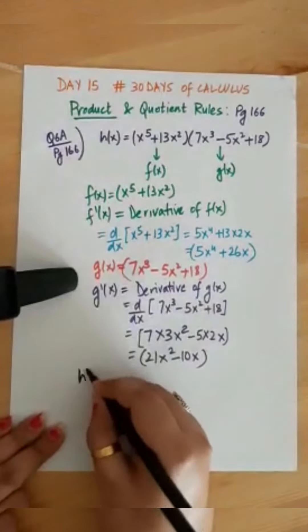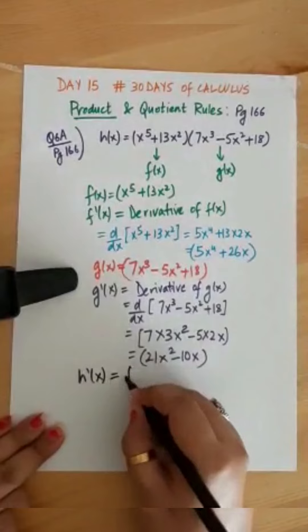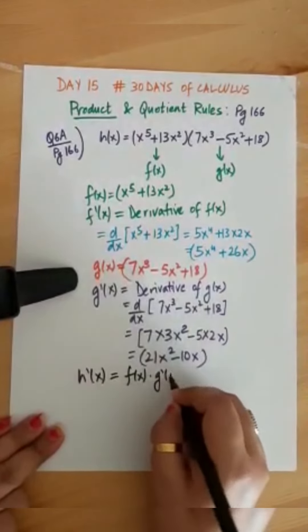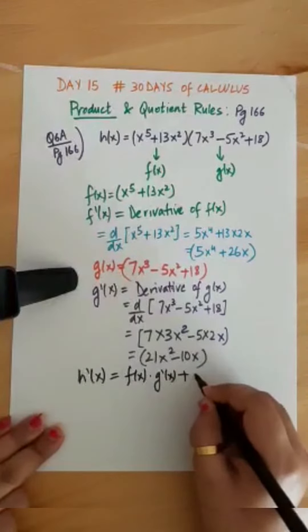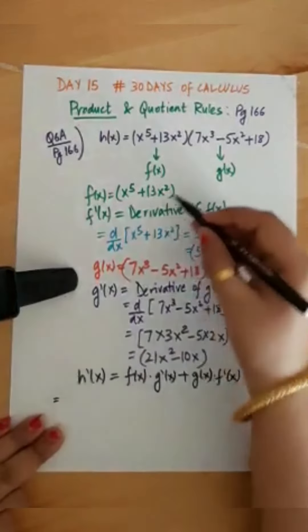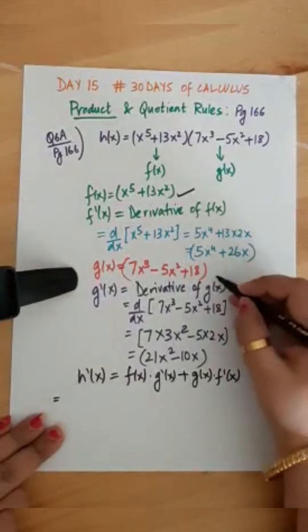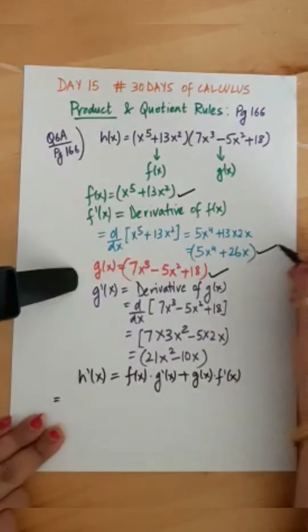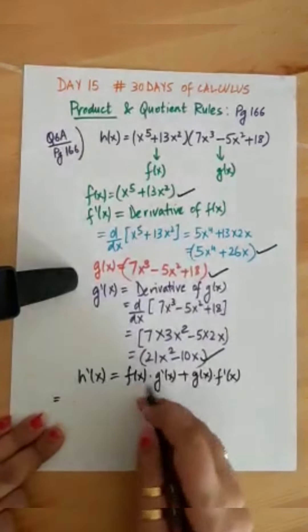Now the product rule says the derivative of h(x) which is the product of the two functions is f of x multiplied with g prime of x plus g(x) multiplied with f prime of x. So let's substitute the values. f(x) is given, g(x) is given, f prime and g prime we have calculated.